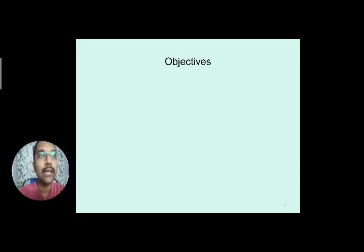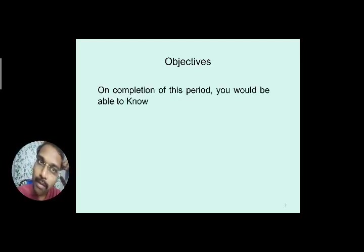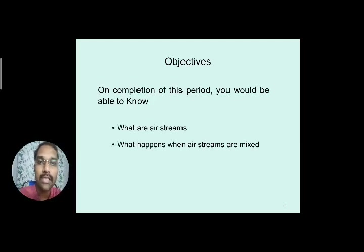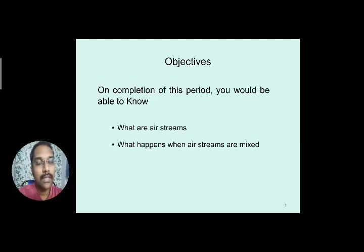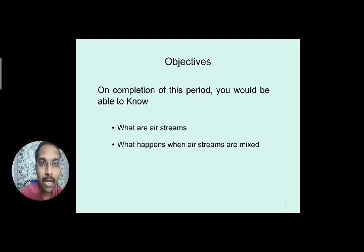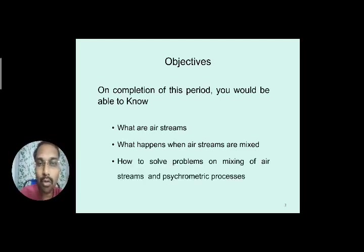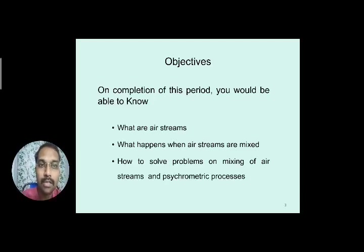Today's objective is to understand what happens when mixing of air streams takes place, and how to solve various numerical problems on that topic. We will also look at what happens when return air or fresh air or conditioned air bypasses the cooling apparatus and mixes at some other place, and how to solve problems on mixing of air streams and psychrometric processes.